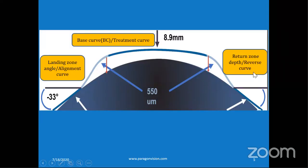The second important curve is the return zone depth, also called reverse curve. It is just outside of the base curve, where the contact lens lifts off the cornea. It is an S-shaped, sigmoid-shaped curve, measured in microns of sagittal depth. The sagittal depth is the distance or space between the cornea and the contact lens. If greater the return zone depth, greater will be your sagittal depth. By changing this sagittal depth, you can achieve good centration and fitting of the contact lens.